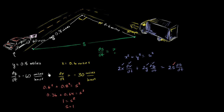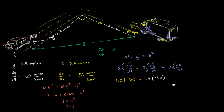Substituting in: 2 times x is 1.2, times dx/dt which is negative 30 miles per hour, plus 2 times y is 1.6, times dy/dt which is negative 60 miles per hour. This equals 2 times s — and s is 1 mile — so it's just 2 times ds/dt, which is what we're solving for.